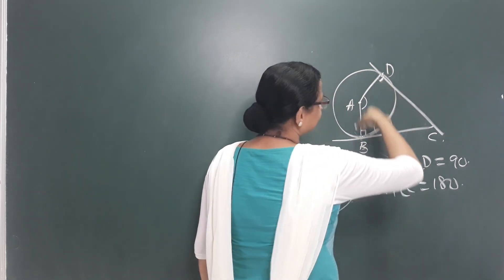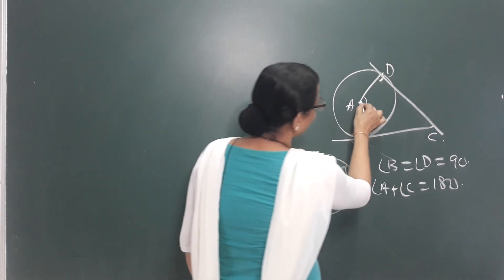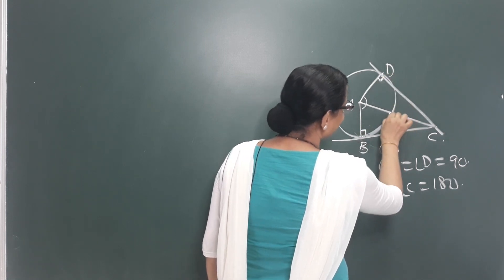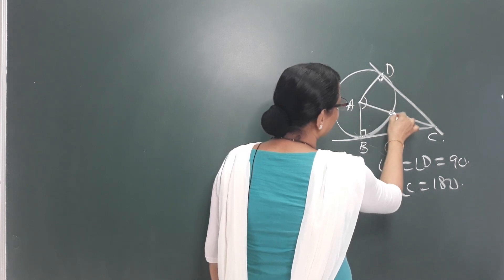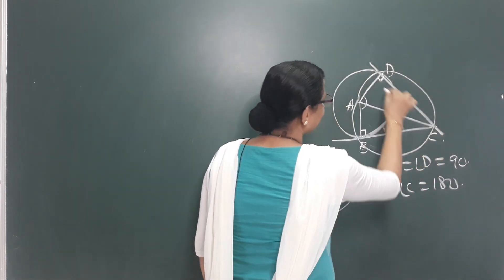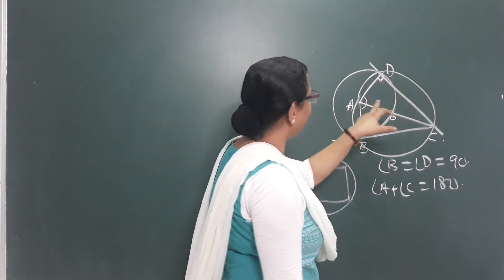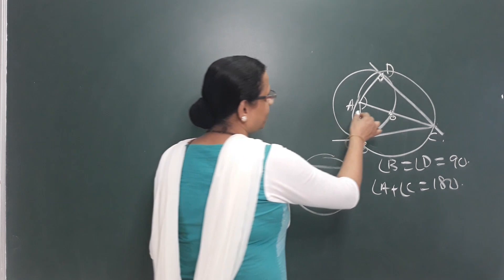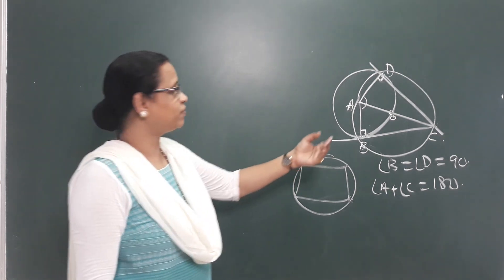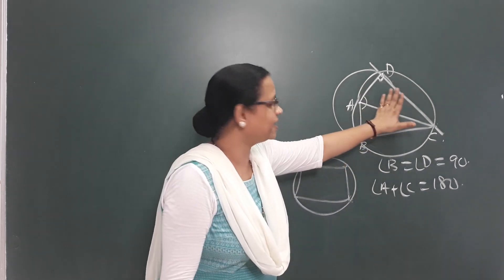This is a circle with points A, B, C, D. I will join diagonal AC. This forms a right-angle triangle since the angles are 90 degrees each. This is the circumcircle, making ABCD a cyclic quadrilateral. Angle B equals angle D equals 90 degrees, and angle A plus angle C equals 180 degrees. The opposite angles are supplementary — 90 plus 90 is 180 degrees. This is the theory for this second topic.